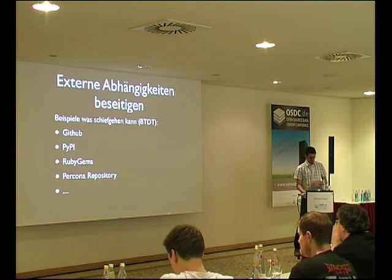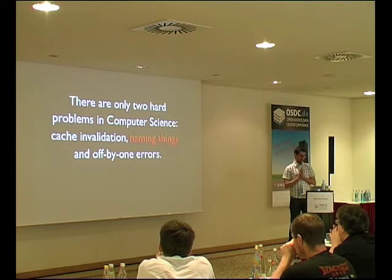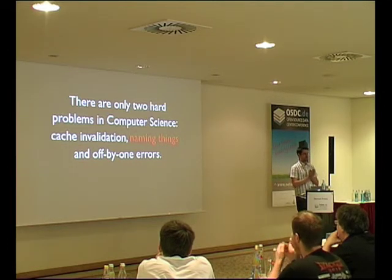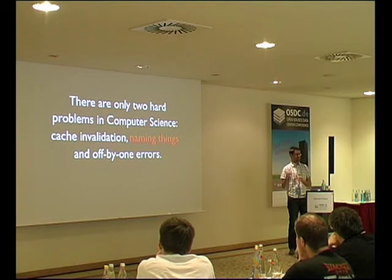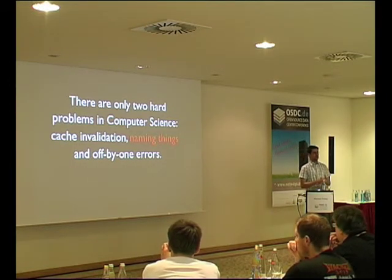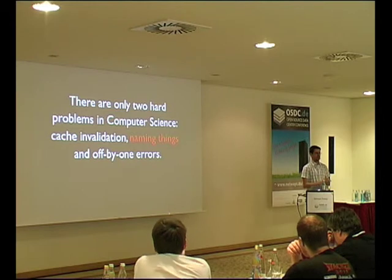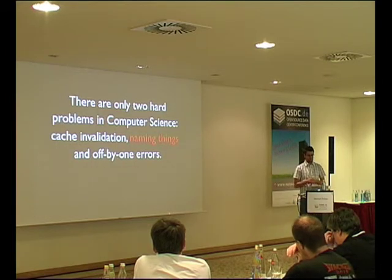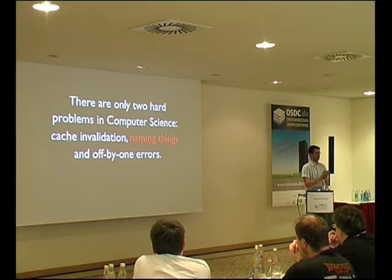Es gibt unzählige Aufschreie auf Twitter, wo Leute sagen: 'Ich kann nicht deployen, weil GitHub ist down.' Der Ansatz von Continuous Integration war aber ein anderer – man ist unabhängig von einzelnen Maschinen, und da gehört natürlich auch Infrastruktur wie GitHub dazu. Wirklich weg von externen Abhängigkeiten. 'There are only two hard problems in Computer Science: Cache Invalidation, Naming Things, and Off-by-One Errors.' Naming Things ist wirklich wichtig, wenn man Jenkins im größeren Stil verwendet – irgendwann hat man Jobs, wo man nicht mehr weiß, was die eigentlich machen. Da ist wirklich wichtig, sich ein Schema zu überlegen, wie Jenkins-Jobs heißen sollen.